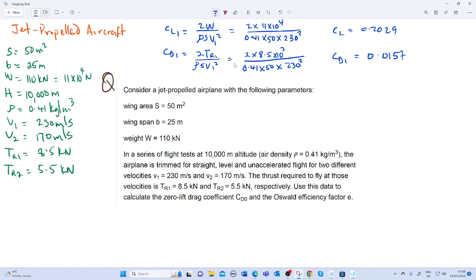Also our CL2 which equals 2W over ρSV2², which equals 2 times 1.1 times 10⁴ over 0.41 times 50 times 170 squared. Our CL2 equals 0.37.